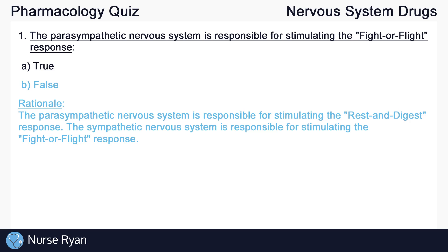The answer here is B, false. The parasympathetic nervous system is responsible for stimulating the rest and digest response, while the sympathetic nervous system is responsible for stimulating the fight or flight response.